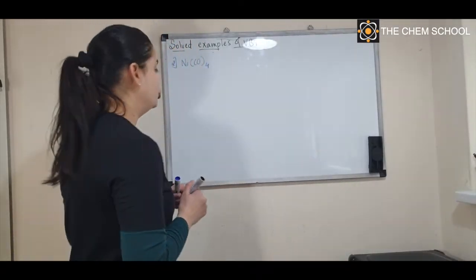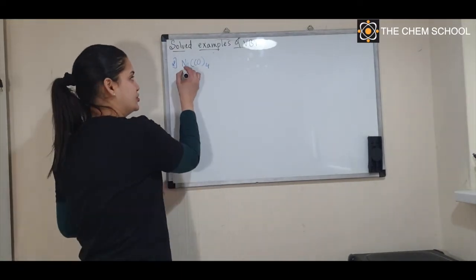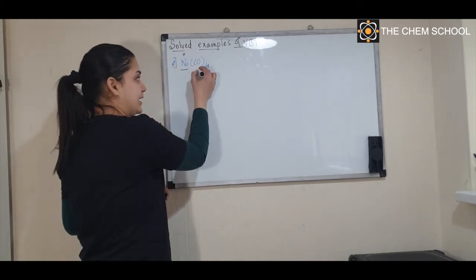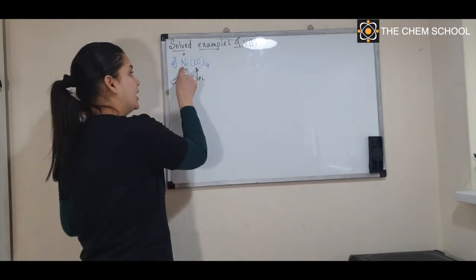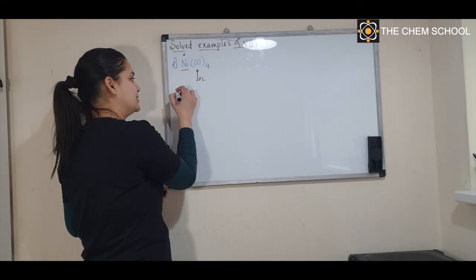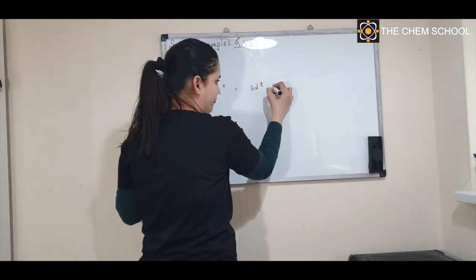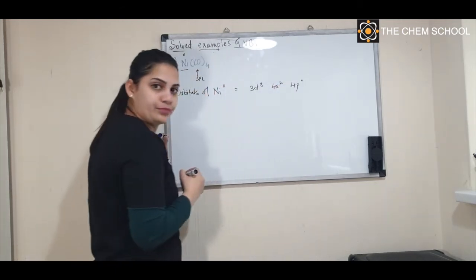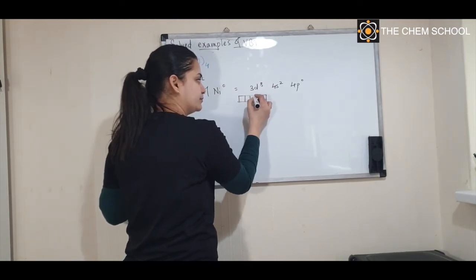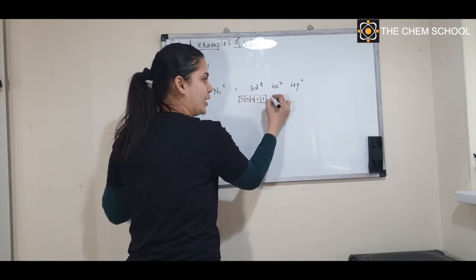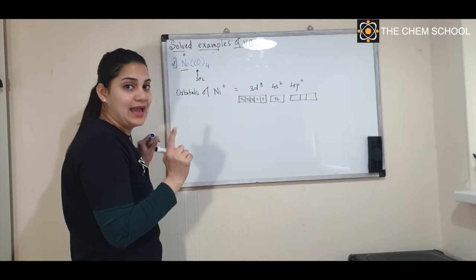Let's solve the second example: NiCO₄. This looks similar to NiCl₄, but there is a difference. Again, start with the oxidation number — for nickel in NiCO₄, the oxidation number is zero. Second, CO is a strong field ligand, so it can cause spin pairing. Third, write down the electronic configuration: orbitals of Ni⁰ are 3d⁸, 4s², 4p⁰. Draw the orbitals and fill the 8 electrons in d. You have 2 electrons in s and p orbital is completely empty.